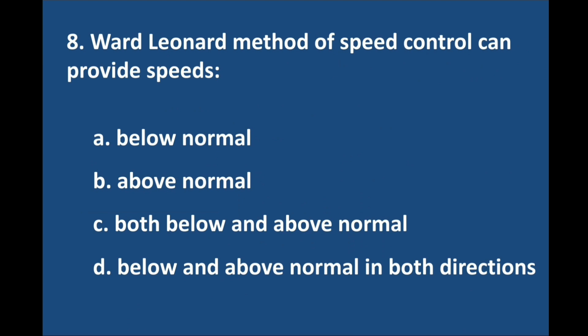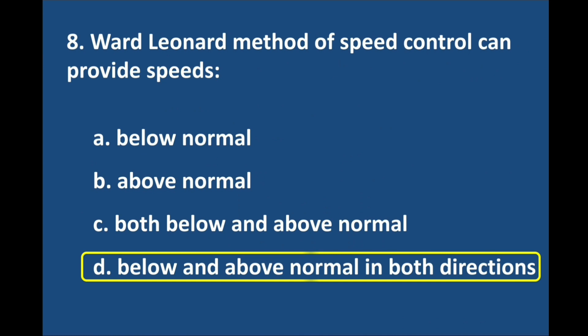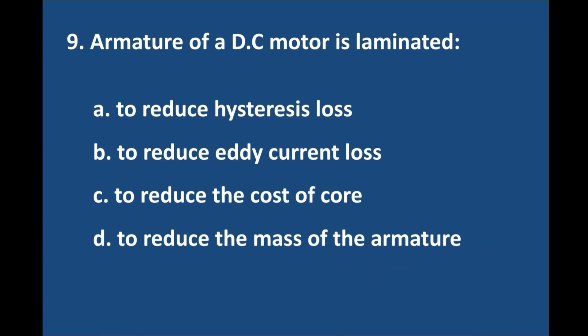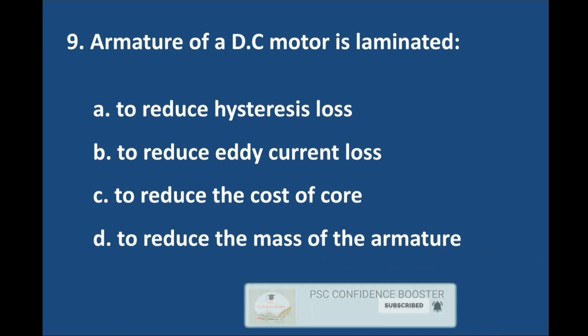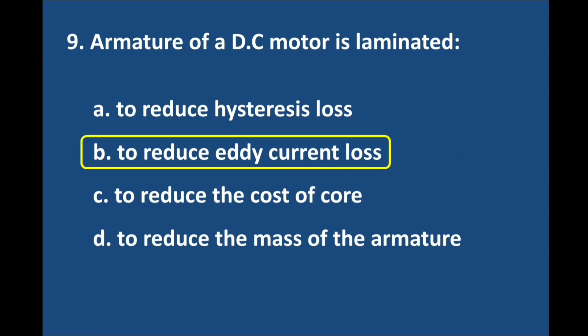Question number 8. What Leonard method of speed control can provide speed? Answer is option D: Below and above normal in both directions. Question number 9. Armature of a DC motor is laminated — answer is option B: To reduce eddy current loss.